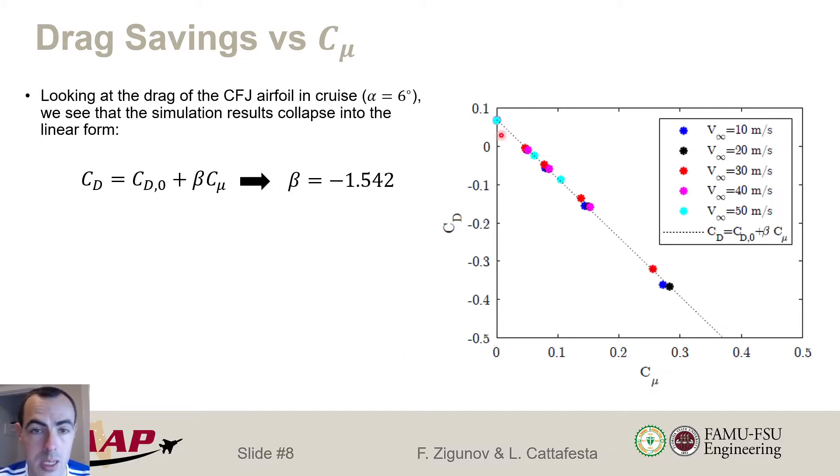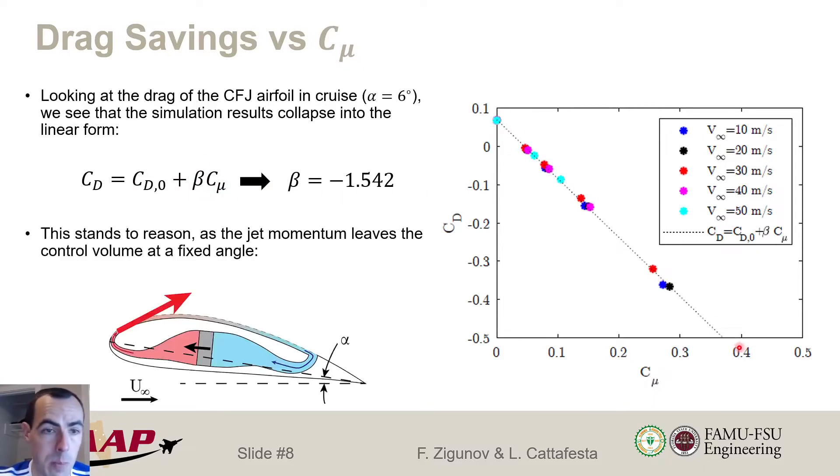Okay, so looking into the drag coefficient, we also find that there is a very nice collapse as a function of Cμ, or the momentum coefficient by the jet. And that collapse is basically of a linear fashion. So we have some baseline drag where we don't have any co-flow at CD0. And then we have Cμ times some constant beta, which is negative because we're producing thrust. Here's a little schematic. We're producing this jet, which produces thrust.